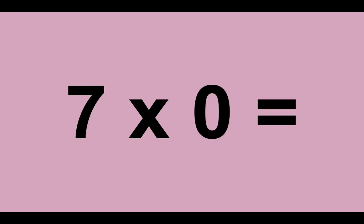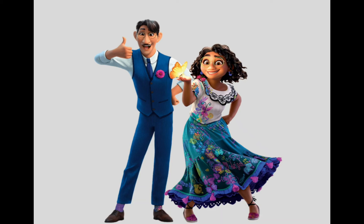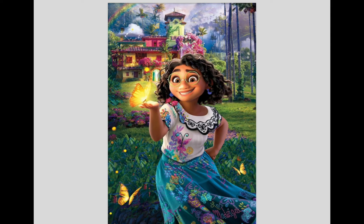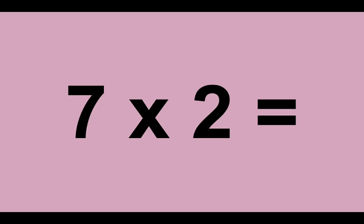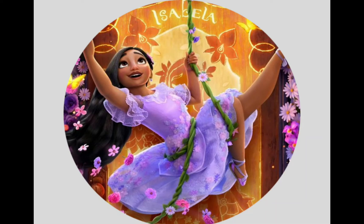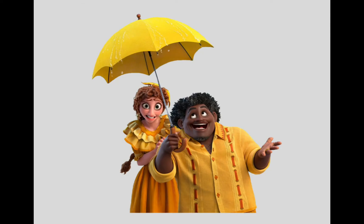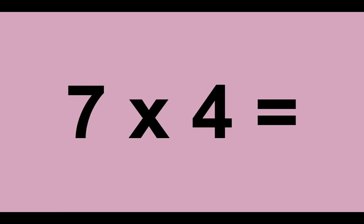7 times 0 equals 0. 7 times 1 equals 7. 7 times 2 equals 14. 7 times 3 equals 21. 7 times 4 equals 28.